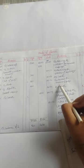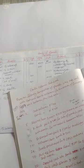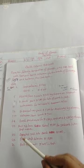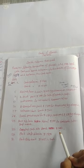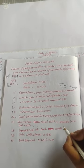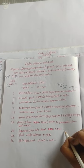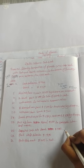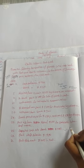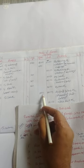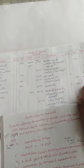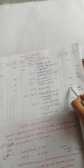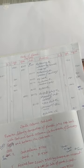Deposit cash into bank: 1,400. The journal entry is bank account debit to cash account. In the cash book, on the debit side write 'To cash account' with 1,400 in the bank column, and on the credit side write 'By bank account' with 1,400 in the cash column. This is a contra entry.